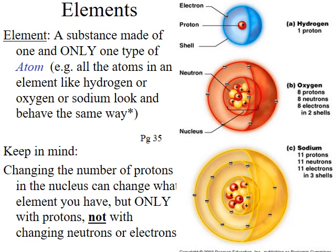So let's talk about elements. An element is defined as a substance made up of one and only one type of atom. Basically that means that all atoms in an element — like hydrogen, oxygen, or sodium — they all behave chemically speaking in about the same way. So hydrogen always behaves the same way, whether it's a hydrogen atom on one side of the planet versus a hydrogen atom on the other side of the planet.